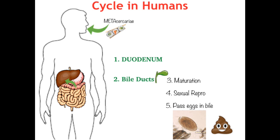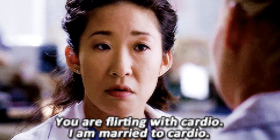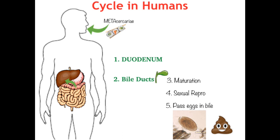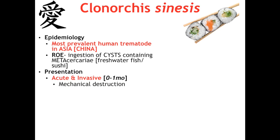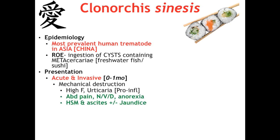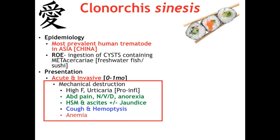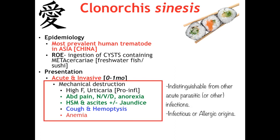Remember: we are doctors, not parasitologists — focus on the infective and diagnostic forms. The acute and invasive phase of clonorchiasis occurs days to months post-ingestion depending on dose, and is due to mechanical tissue destruction from baby flukes eating their way from the duodenum to the biliary tree. The symptom profile is indistinguishable from other parasitic or infectious causes, so let's move on to what sets Clonorchis apart.